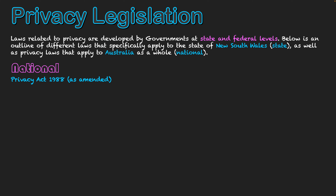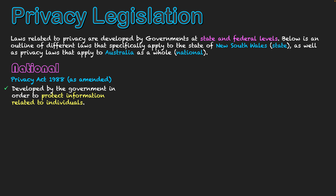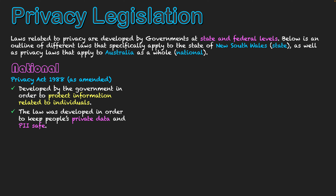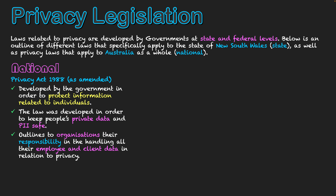In Australia, that is the Privacy Act 1988. This law was developed by the government in order to protect information related to individuals. The law was developed in order to keep people's private data and PII safe. It outlines to organizations their responsibility in the handling of all their employee and client data in relation to privacy.